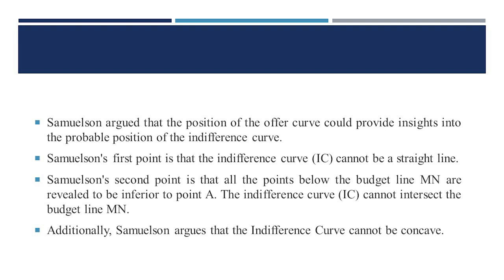Samuelson's second point is that all points below the budget line MN are revealed to be inferior to point A, meaning the consumer clearly prefers A to any point below MN. Therefore, the indifference curve cannot intersect the budget line MN. Additionally, Samuelson argues that the indifference curve cannot be concave. Since all points above the budget line MN are revealed as superior to A, an indifference curve cannot pass through the preferred zone JAK. Therefore, the position of the IC — indifference curve — would be somewhere in the ignorance zone passing through A, as depicted through the offer curve EF.